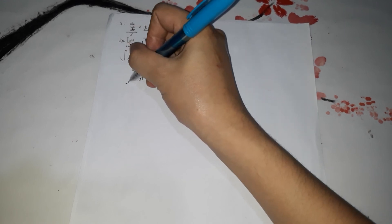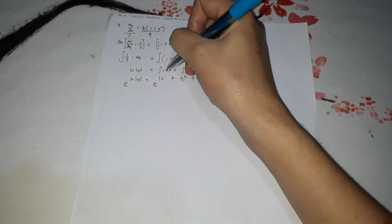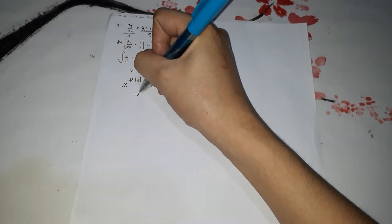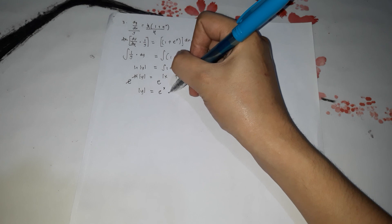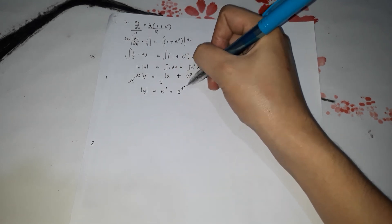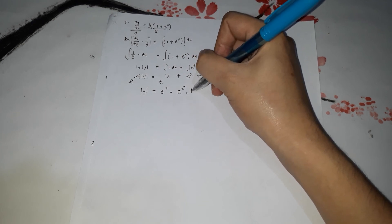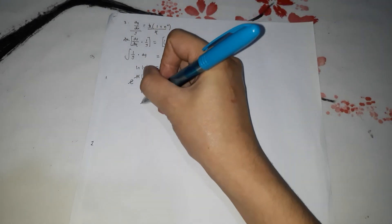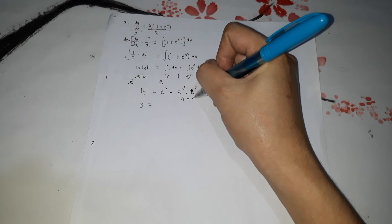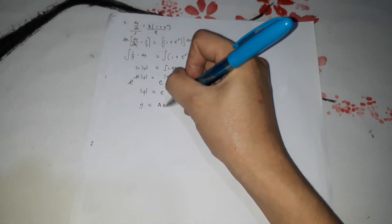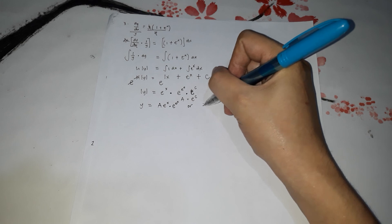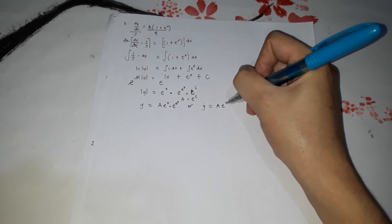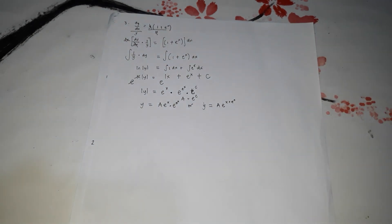To cancel ln, we raise both sides as exponents of e. The absolute value of y equals e to the (x + e to the x + c). We can write this as e to the c times e to the x times e to the e to the x. Let a equal e to the c. To simplify, y is equal to a times e to the power of x plus e to the x. That's the answer for number 3. So that ends solving differential equations.